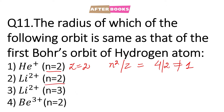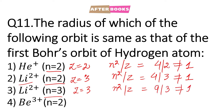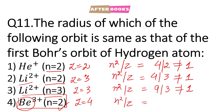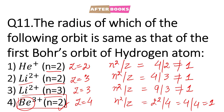Considering option 3 — n = 3, z = 3 for lithium, so n²/z = 9/3, which is again not equal to 1. Considering option 4 — n = 2, and for beryllium the atomic number is 4, so n²/z = 2²/4 = 4/4, which is equal to 1. So the radius equals Bohr's radius. Option number 4 is the correct answer.